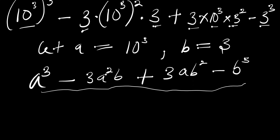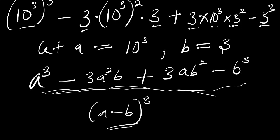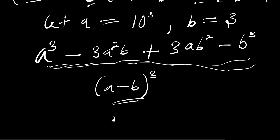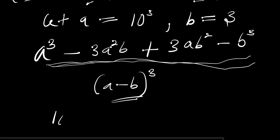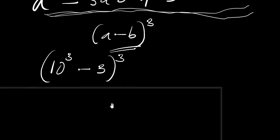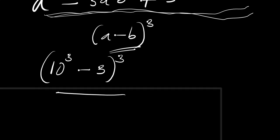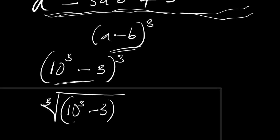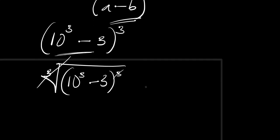So this is where the trick is. We can simply express what we have as (a minus b)³, which is (10³ minus 3)³. Now remember there was a cube root from our original question. So if we insert this inside the cube root, the cube root will cancel the cube, and what we are left with is simply 10³ minus 3, which is 1000 minus 3.